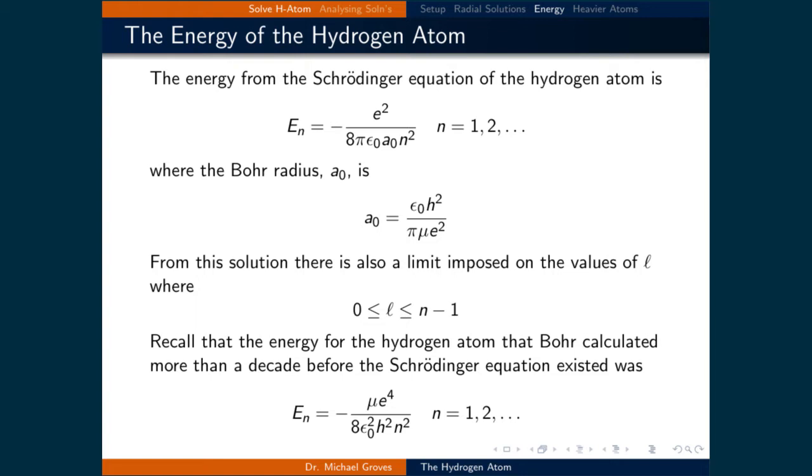This should look familiar as this is the relationship between the n quantum number and the L quantum number that is commonly known. The relationship between these two quantum numbers are imposed by the solution to the Schrödinger equation for the hydrogen atom.